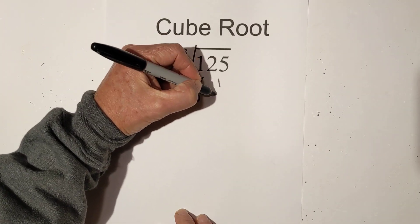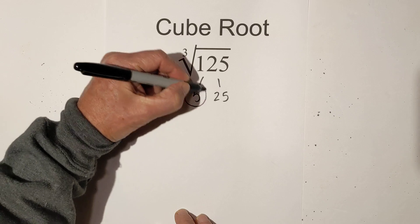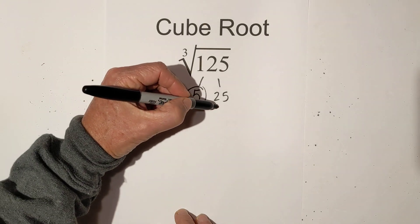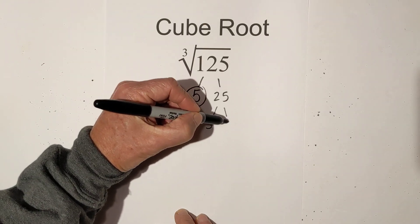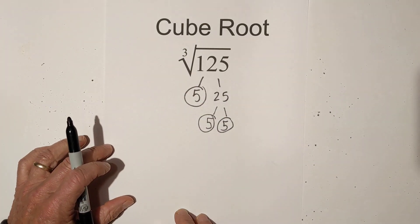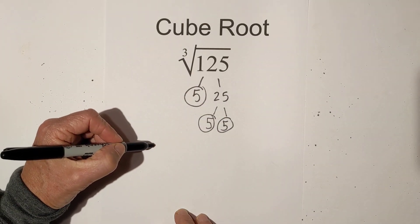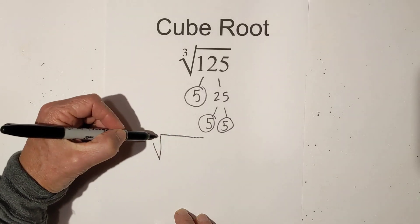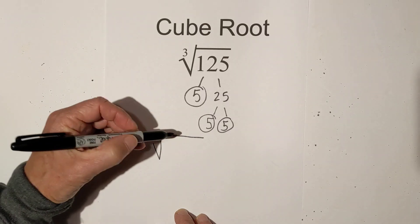Let's begin. 5 times 25, circle the 5 because it is prime and then 5 times 5, circle both of these because they are both prime. Now we can place all the prime numbers under the cube root sign.